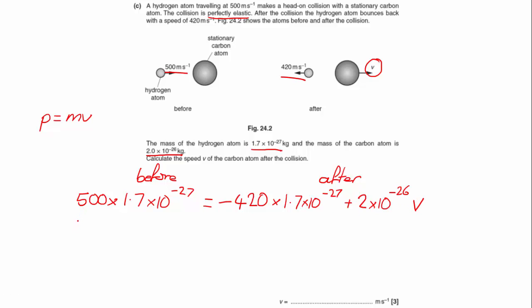If we rearrange, we're going to get 500 times 1.7 times 10 to the minus 27 plus 420 times 1.7 times 10 to the minus 27. And then if I divide that by the mass of the carbon atom, 2 times 10 to the minus 26, that will give us an answer of 78.2 meters per second.